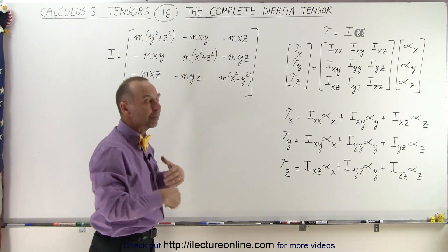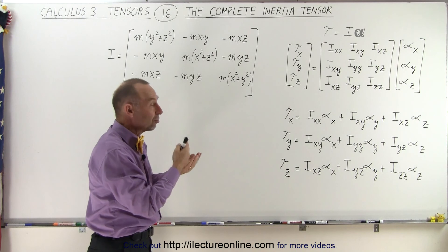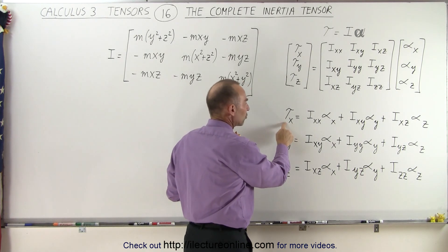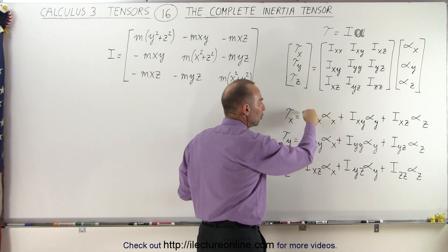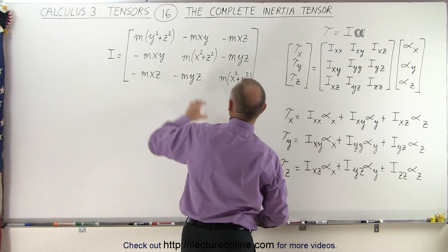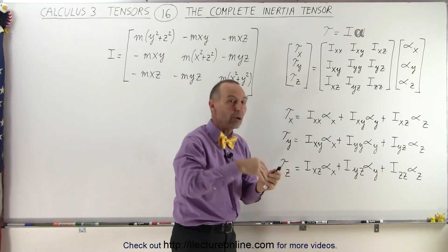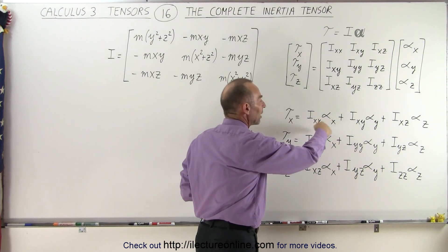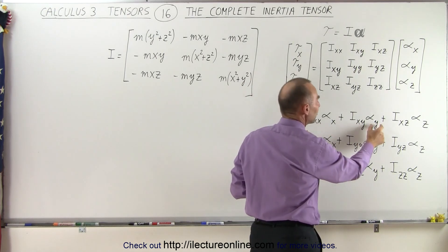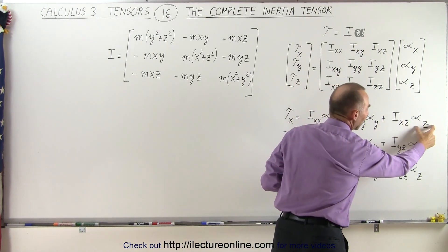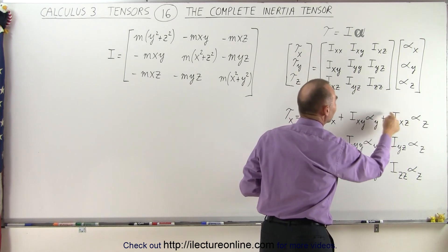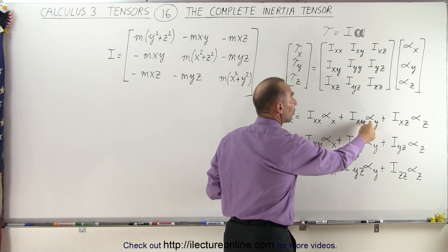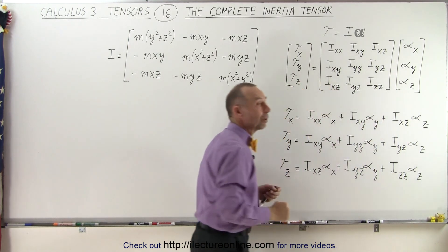The off-diagonal elements represent the potential for an angular acceleration along another unintended axis. For example, if we apply a torque in the x-direction, we expect an angular acceleration in the x-direction using the Ixx term. But it could also potentially give you an angular acceleration around the y-axis and the z-axis, depending upon the value of these off-diagonal terms. If they're not equal to zero, that torque in the x-direction may also give you an angular acceleration around the y-axis and around the z-axis.